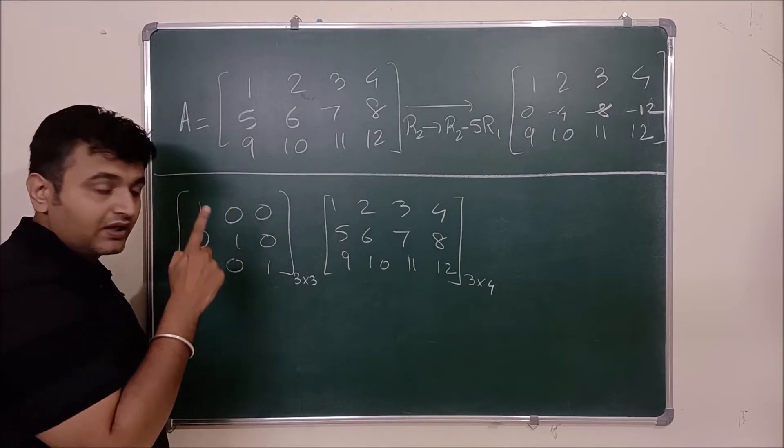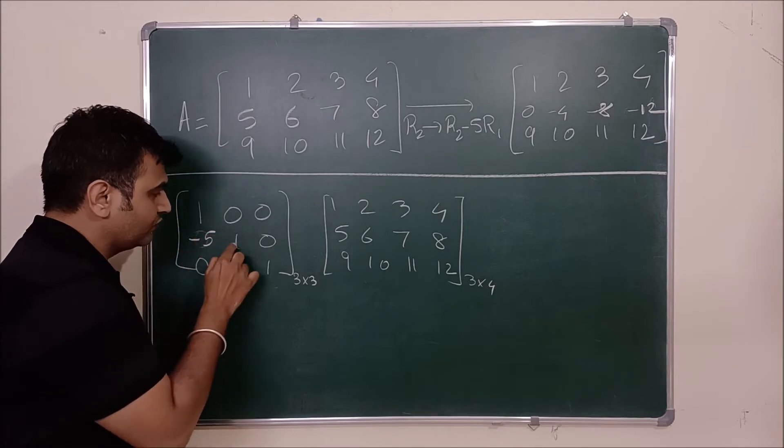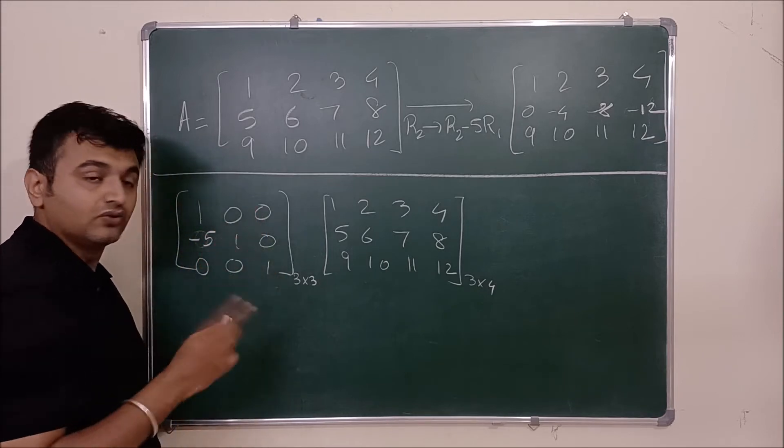What is R2 minus 5 R1? 0 minus 5. So here it would be minus 5. 1 minus 0, 0 minus 0.